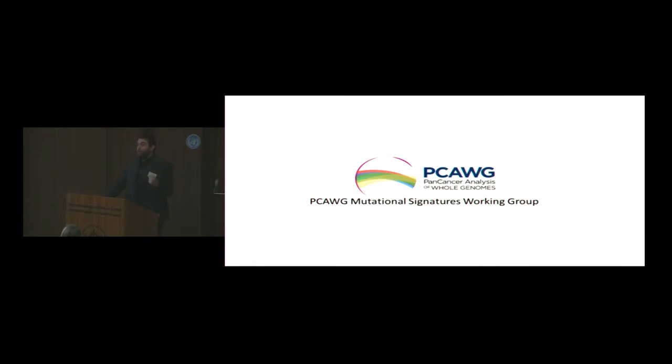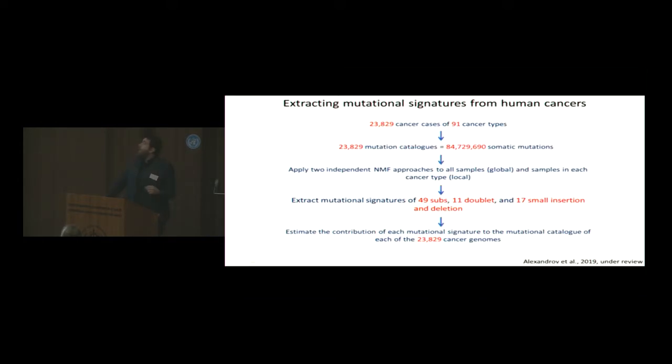Initially, we started with 2,700 genomes. But as part of the process, we decided, well, let's get everything. Let's make it bigger. And what we did is we curated all of the available data at the time. So that's about 23,000 cancer patients. For each patient, we have a matched normal. We have a normal tissue such as blood and the cancer sequence, either at the whole exome or whole genome level.